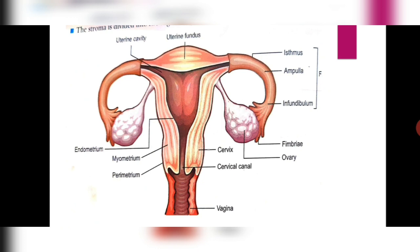Let us now discuss the accessory ducts, beginning with the fallopian tubes. The fallopian tube is further divided into the infundibulum, ampulla and isthmus. The infundibulum is the foremost part which has finger-like projections called fimbriae, responsible for capturing the ovum after ovulation. The next swollen part is known as the ampulla, and the isthmus is the part of the fallopian tube or oviduct which connects the oviduct to the uterus.